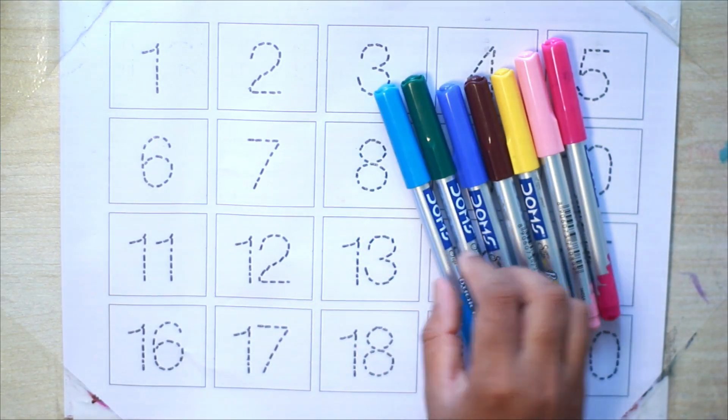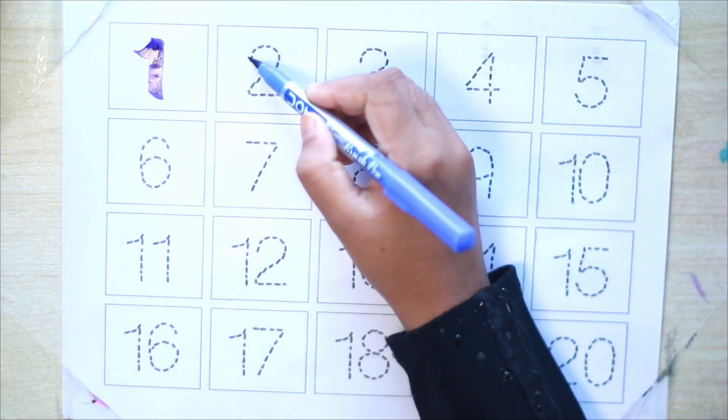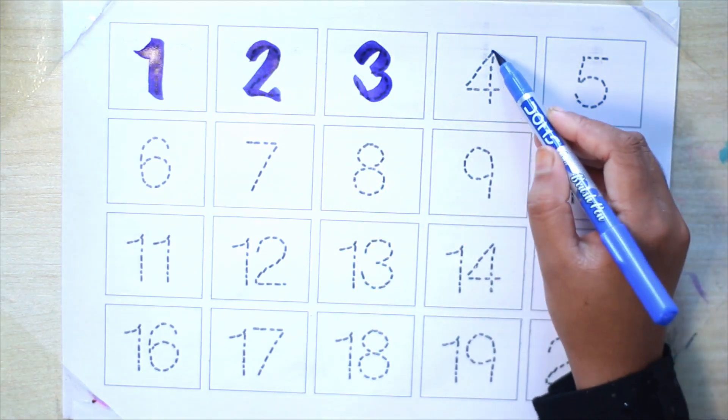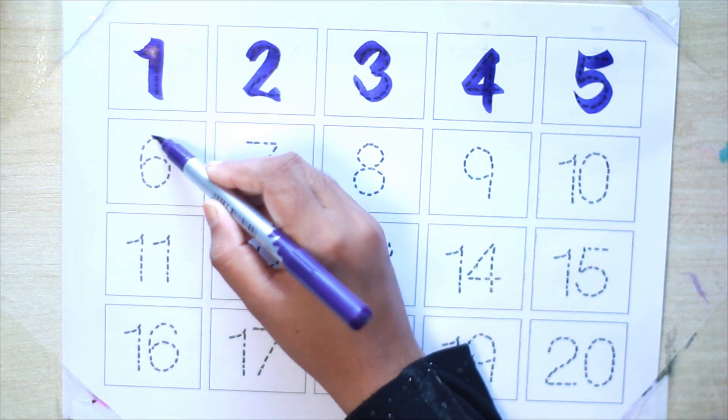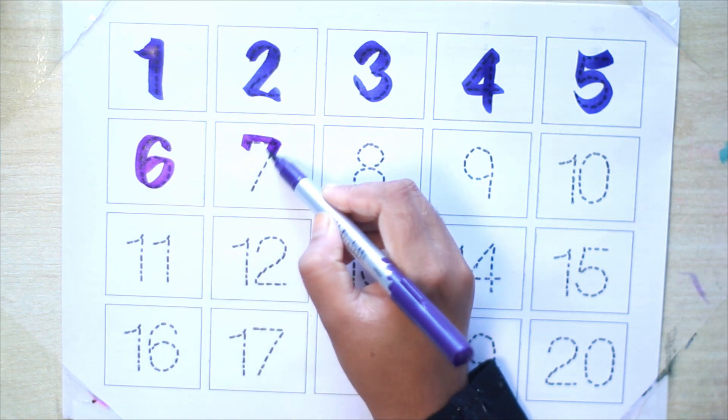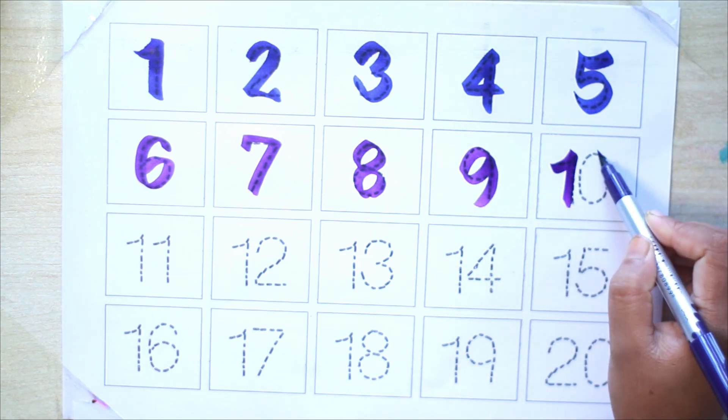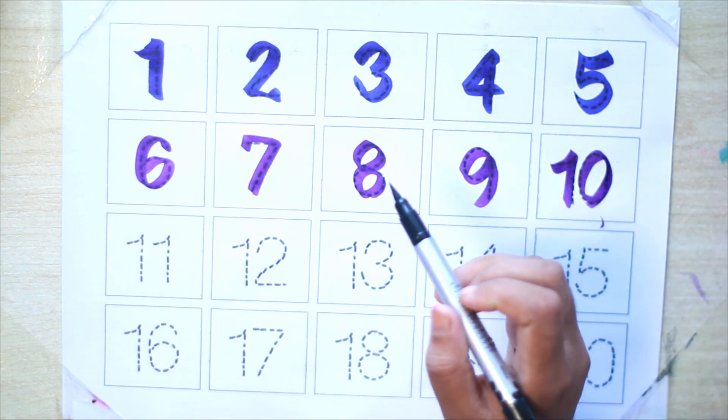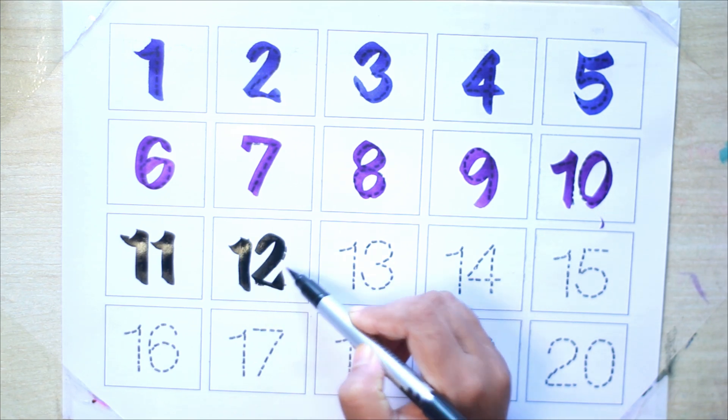Blue color: 1, 2, 3, 4, 5. Violet color: 6, 7, 8, 9, 10. Black color: 11, 12.